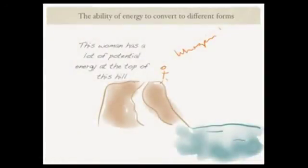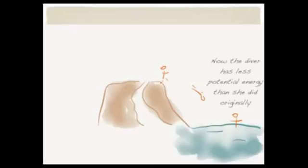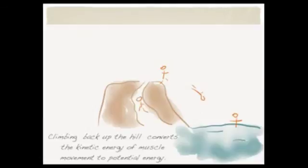Here's another example of how energy converts to different forms. This woman has a lot of potential energy standing on top of the hill. As she dives, her energy is converted from potential energy into kinetic energy — now she's moving. At the bottom, in the water, she has less potential energy than she did originally; she lost some energy as she dove through the air, converted into kinetic energy. But as she walks back up the hill, the kinetic energy of her muscle movement is stored as more potential energy, so once she's back at the top, she has a lot of potential energy again.